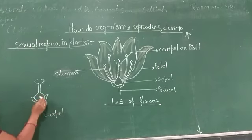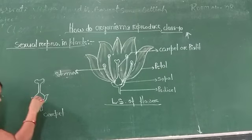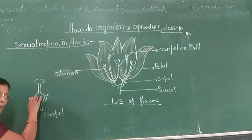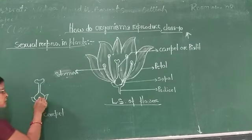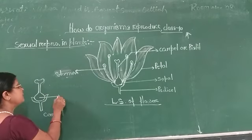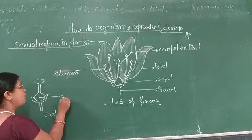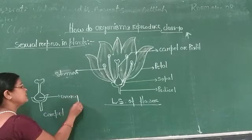At the bottom of the carpel, the globose structure is called the ovary.